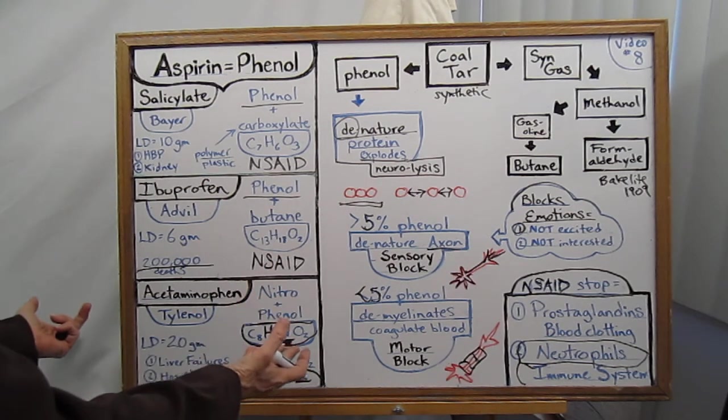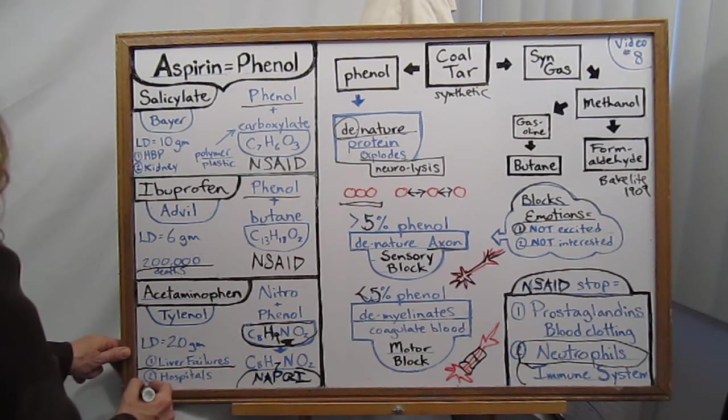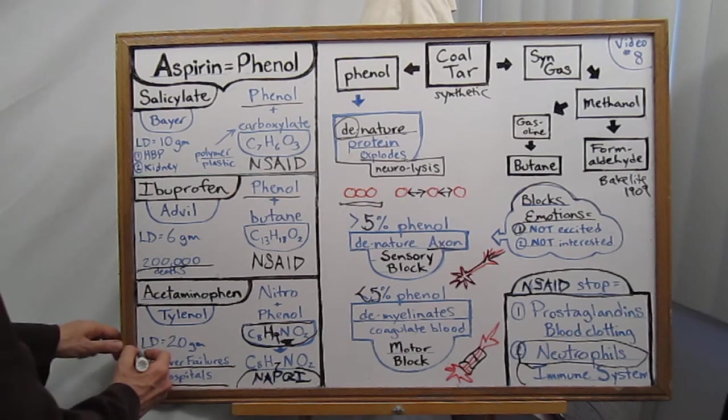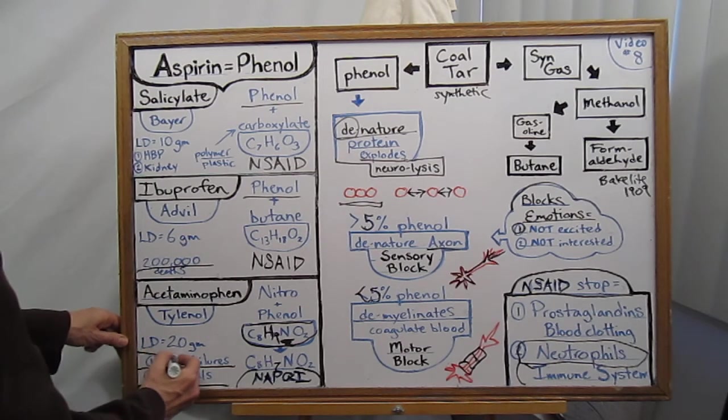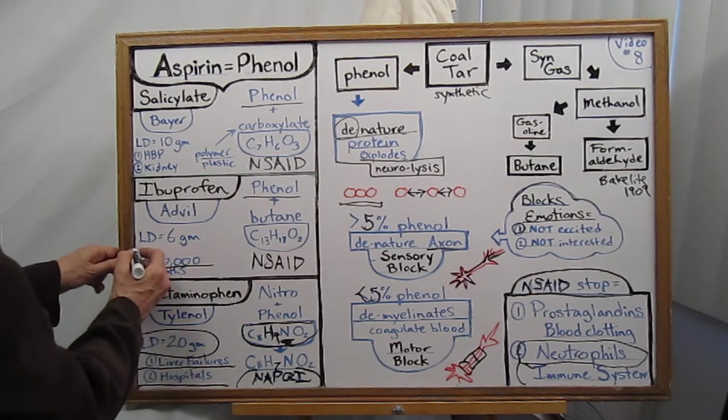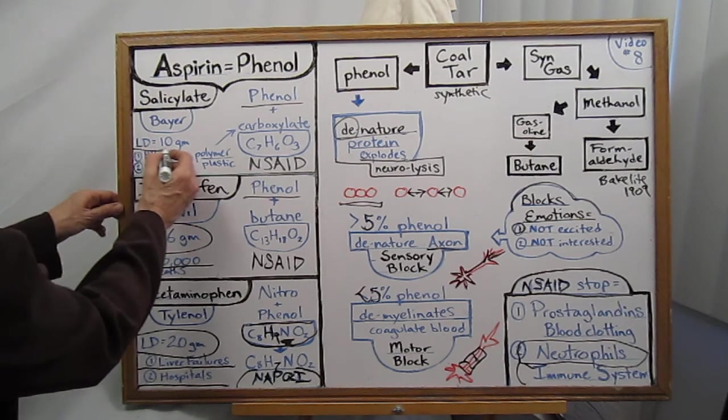And they say they don't know how it works, but it is the leading cause of liver failure in the world and hospitalizations. The lethal dose for acetaminophen is 20 grams for an adult, the ibuprofen six grams, and the salicylates 10 grams. These are very toxic.